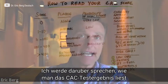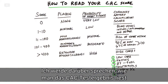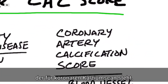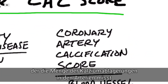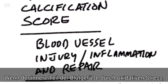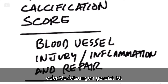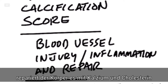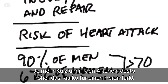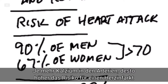Let's talk about how to read a CAC score. What is CAC? It stands for coronary artery calcification score. This is the amount of calcium and plaquing that is inside your arteries. When the inside of the blood vessel becomes irritated through oxidative stress or injury, the body comes in to repair it with calcium and cholesterol. And the more calcium you have in the arteries, the more you're at risk for getting a heart attack.